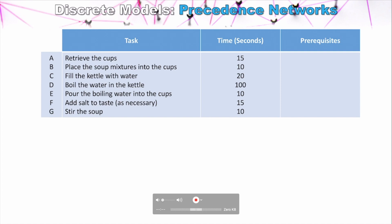The first step is to look at what the prerequisites are. Sometimes there aren't any prerequisites, but sometimes something needs to happen first — like you need to boil the water before you can pour boiling water into cups, otherwise you're just pouring cold water. Retrieving the cups doesn't require anything else, so it has no prerequisites. However, to place the soup mixtures into the cups, we need to retrieve the cups first — so we say we have to do A before we can do B.